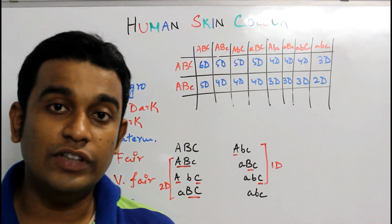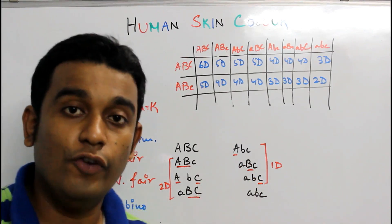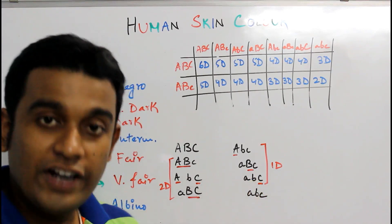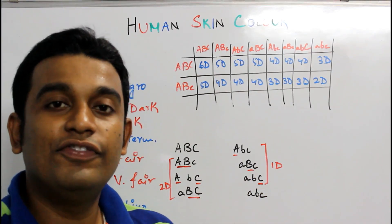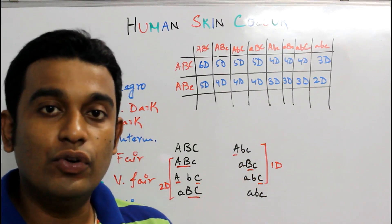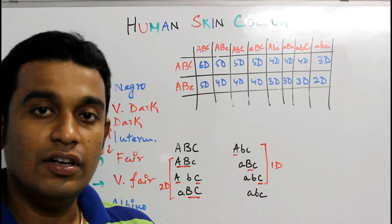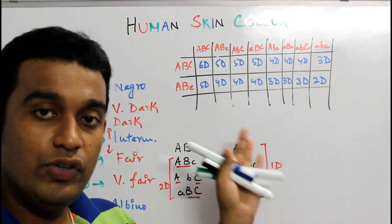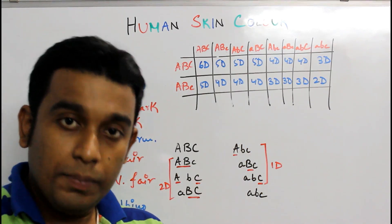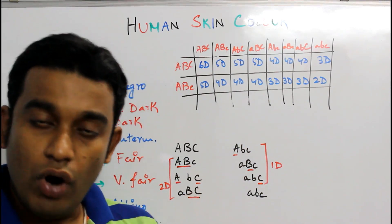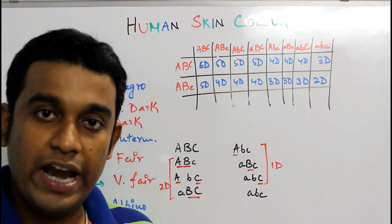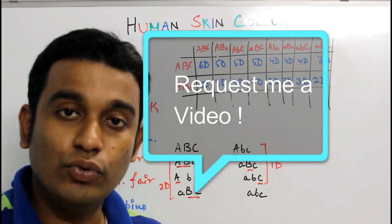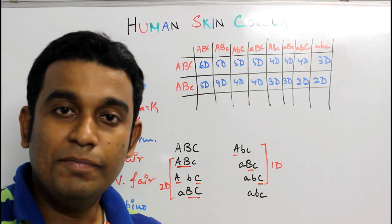In this way you can work out human skin color, which is an example of polygenic inheritance — very easy and interesting. Try to understand the trick. I hope you enjoyed the video. If you have any doubts, feel free to write in the comment section and I will answer all your queries. Whenever you have a doubt in this video, pause the video, go back a little, watch that section again, and you will understand. Thank you so much for watching. If you haven't subscribed, subscribe to the channel and give me a thumbs up. Bye bye, take care.